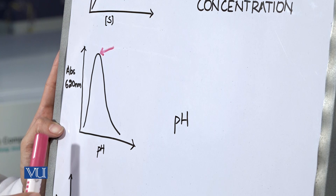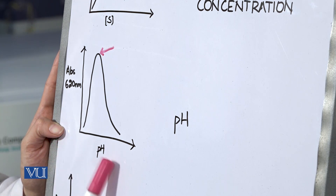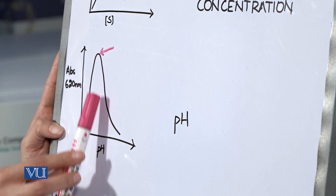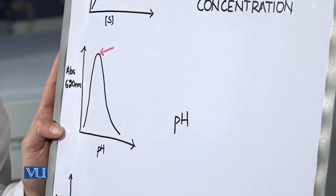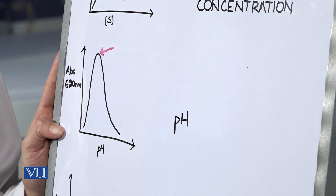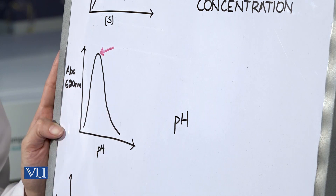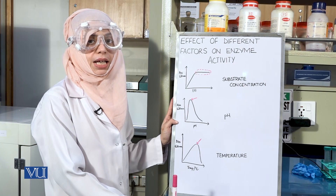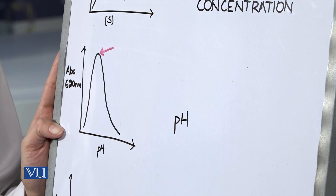When you observe the graph for pH, you will observe that as the pH increases, the absorbance increases initially and then decreases sharply. This point, highlighted by the pink arrow, is known as the optimal pH, which is the pH at which the enzyme works best or shows maximum activity. Beyond this, the enzyme does not work well because the enzyme is protein in nature and changes in pH disturb the ionic interactions of the protein, thereby leading to denaturation of the enzyme.